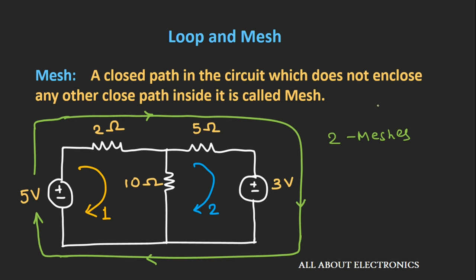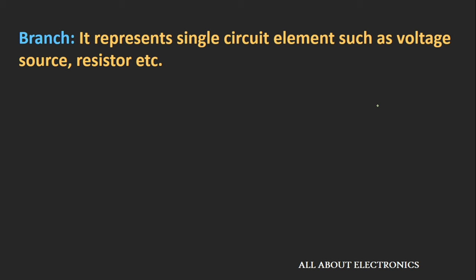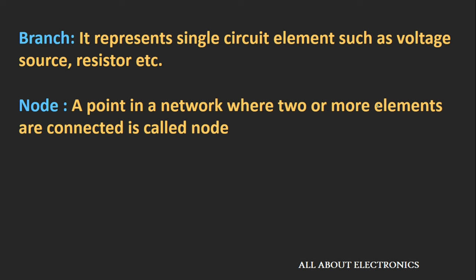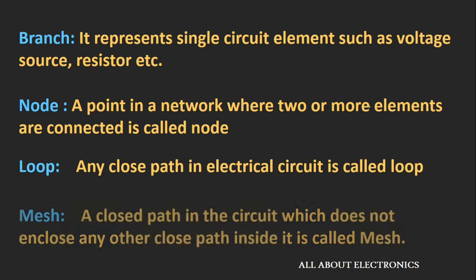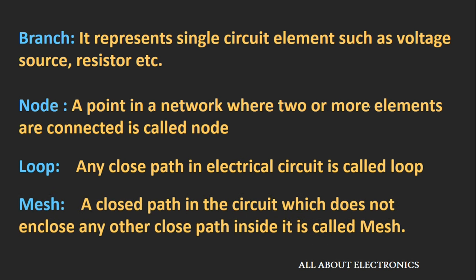Let us summarize the basic circuit terminologies. A branch in the electrical circuit represents a single circuit element — resistor, capacitor, inductor, or a voltage or current source. A node is a point in a network which connects 2 or more circuit elements. Any closed path in the electrical circuit can be called a loop. A mesh is a closed path in the electrical circuit which does not enclose any other closed path inside it.